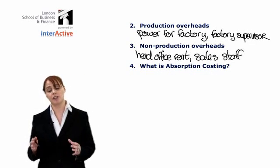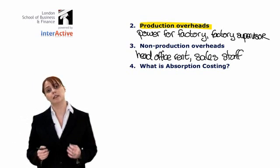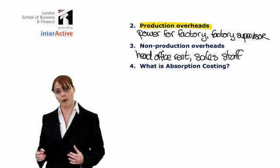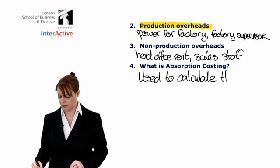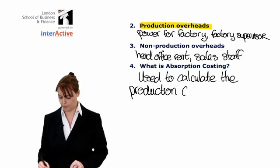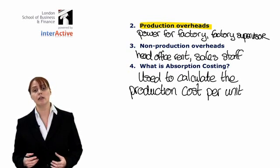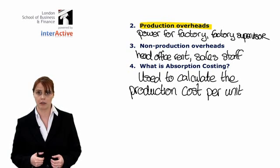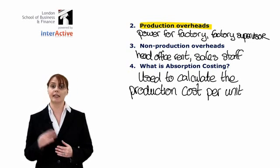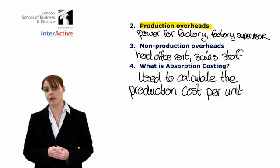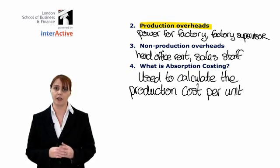In this chapter we are going to be focusing on our production overhead costs. What we are really doing in an absorption costing system is finding some way to calculate the full production cost per unit. It is very important for all companies to know how much it costs to produce each unit of their product — most obviously so that we can calculate what our selling price is going to be, that is, how much we are going to charge our customers.